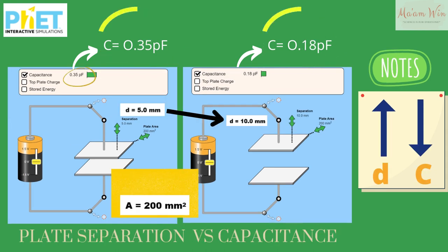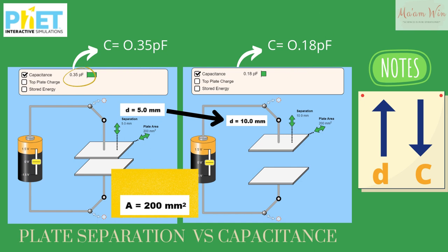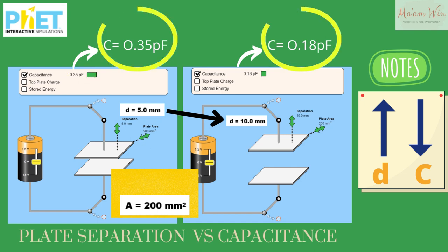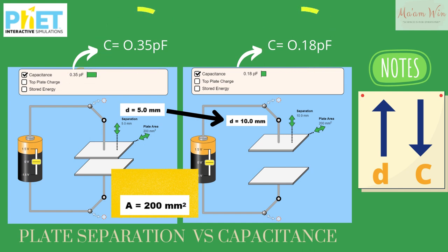This PhET simulation demonstrates that the capacitance of a parallel plate capacitor is inversely proportional to the plate separation. With area constant at 200 square millimeters, if we increase the separation distance from 5.0 millimeters to 10.0 millimeters, you will notice that the capacitance decreases from 0.35 picofarads to 0.18 picofarads.